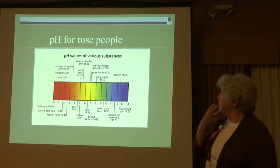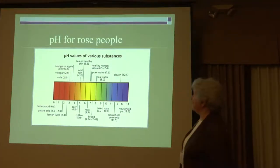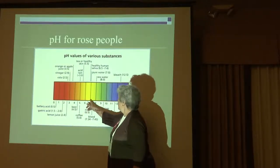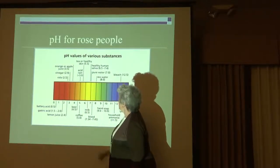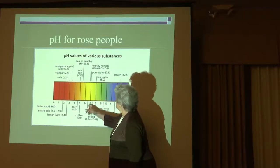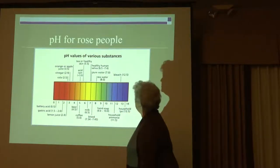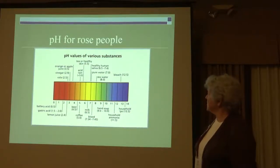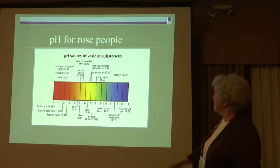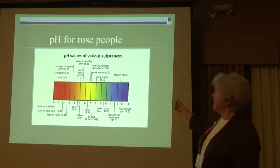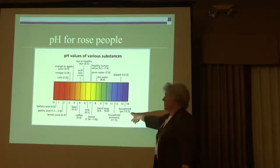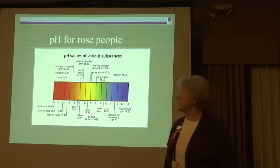For rose people, here is the pH scale. Remember, 7 is pure water. Healthy human saliva is 6.5. Milk is 6.5. The ocean is about 8. Bleach, really alkaline, is at 12.5. Lye is 13.5 — it kills.